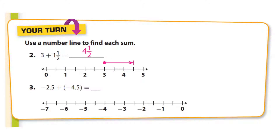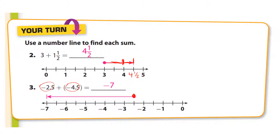On the number line, start at three and move one and a half: first move one, then move one-half — you end at four and a half. For negative 2.5 plus negative 4.5, both are negative so you add them — that's a larger negative: negative seven. On the number line, start at negative 2.5 and move 4.5 to the left — one, two, three, four, then 0.5 — and you land on negative seven.